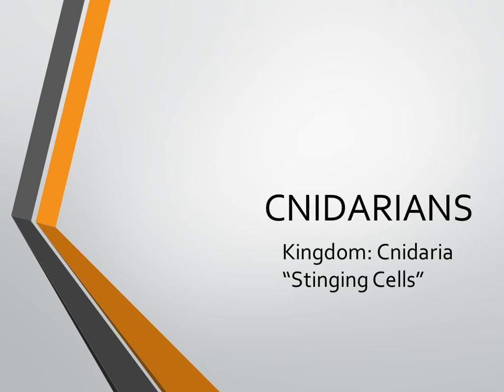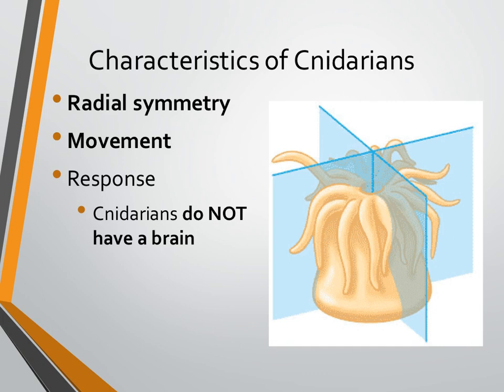This lecture is on Cnidarians. Cnidarians are going to be found on page 5 of your invertebrate booklet. Cnidarians belong to the kingdom Cnidaria, and the word Cnidaria means stinging cells. We're going to start with looking at the characteristics of Cnidarians. You're going to want to write down any words that I put on the slides, as that is the information that you need to know, and I have limited it to strictly what you need to know.